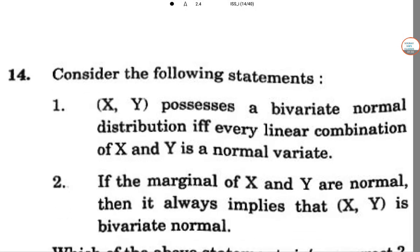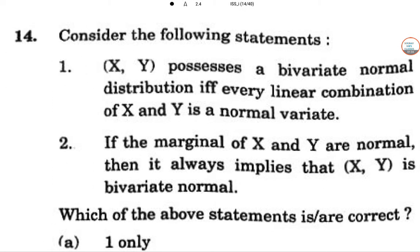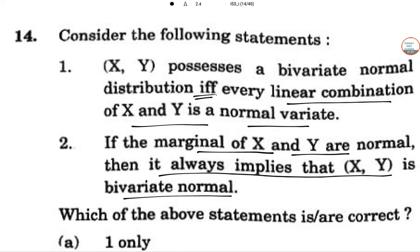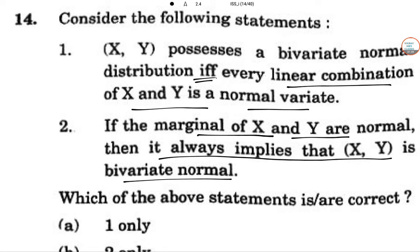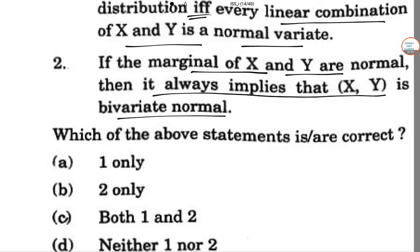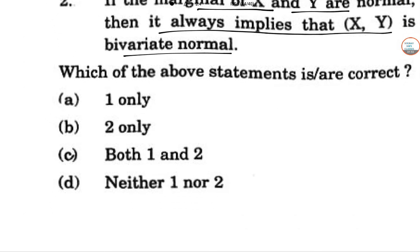Let us go to the next one. Consider the following statements. X and Y possesses bivariate normal distribution if and only if every linear combination of X and Y is normal variate. And if marginal of X and Y are normal, then it always implies that X and Y is a bivariate normal. Which of the statement is correct? So here in this case, we can be verifying this.